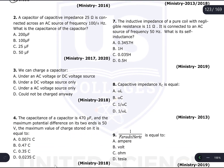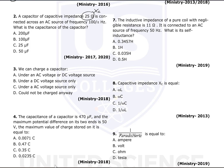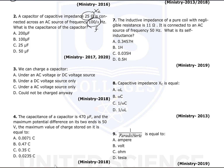Question number two: a capacitor with capacitive impedance X_C = 25 ohms is connected across an AC source of frequency 100/π hertz. What is the capacitance of the capacitor? We know X_C equals 1 over 2πfC.